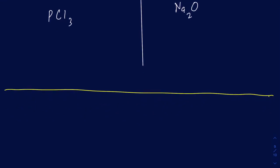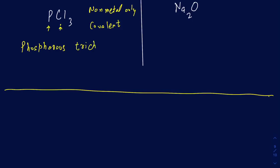Next is PCl3. Is this ionic or covalent? Phosphorus is a nonmetal and chlorine is a nonmetal, so with only nonmetals this is a covalent compound. Since it's covalent, there's no positive or negative — you treat the first nonmetal as the 'cation' and the second as the 'anion.' Phosphorus stays as phosphorus with no prefix since there's only one. With three chlorines, the name becomes phosphorus trichloride.